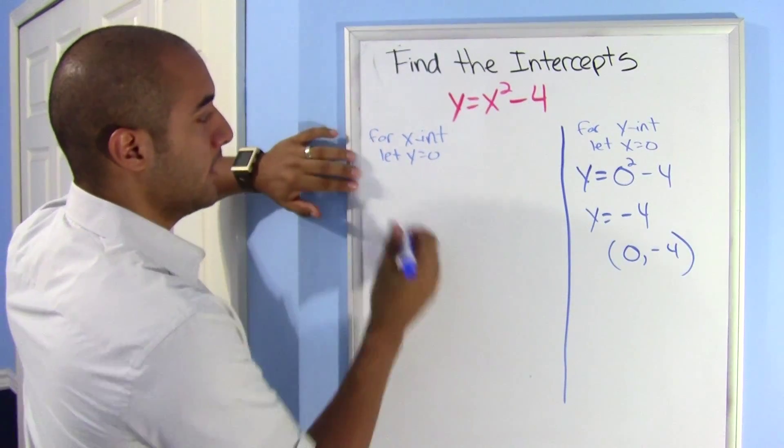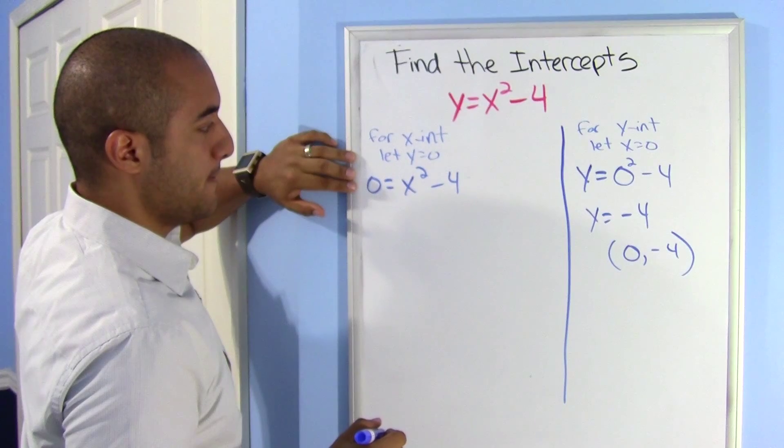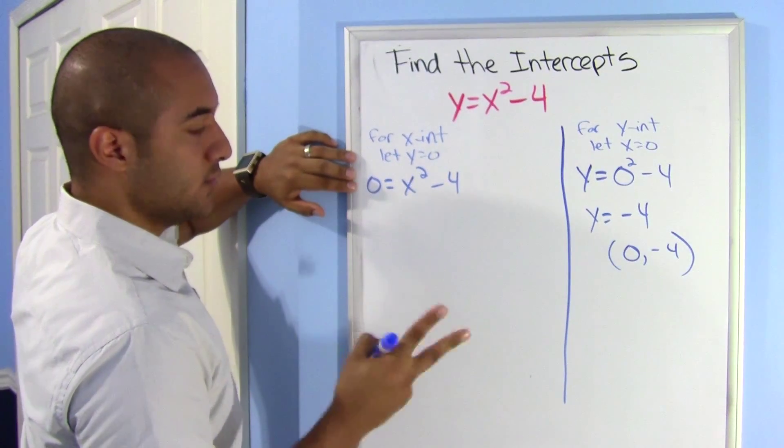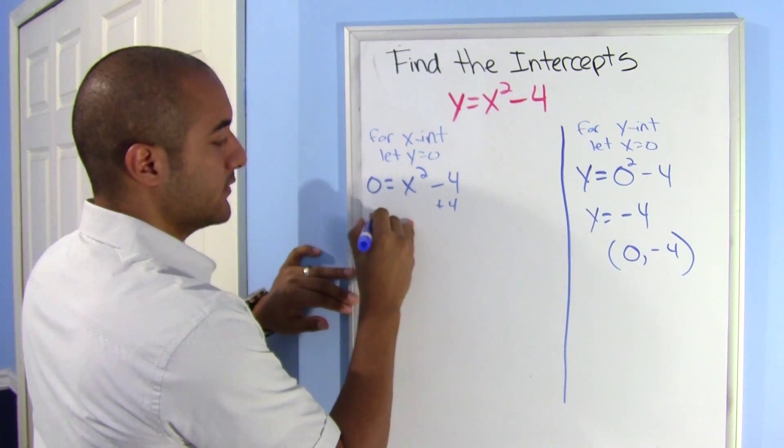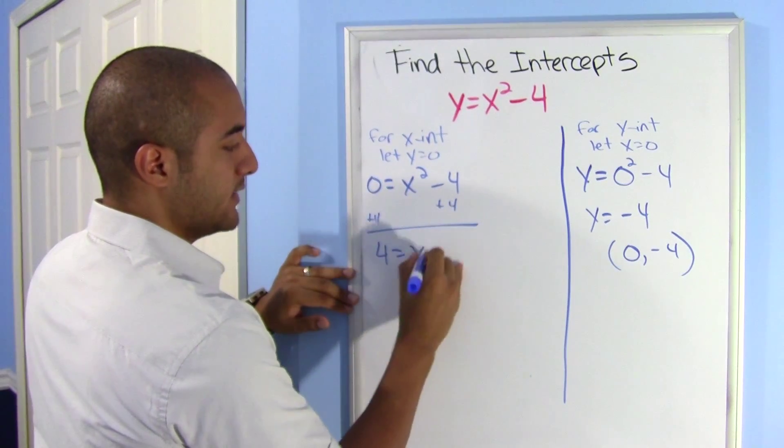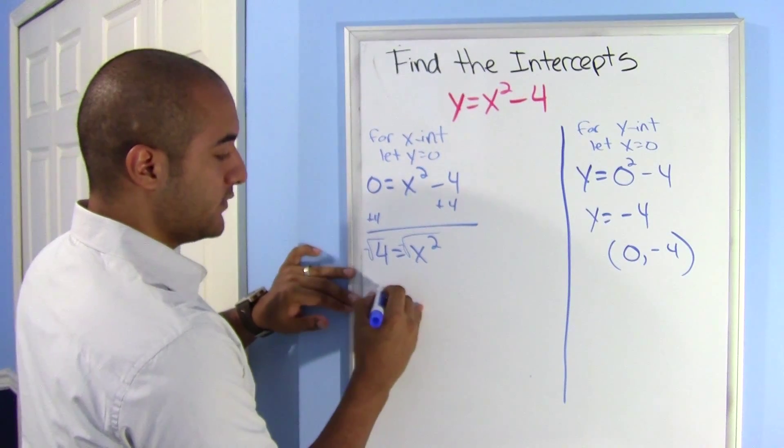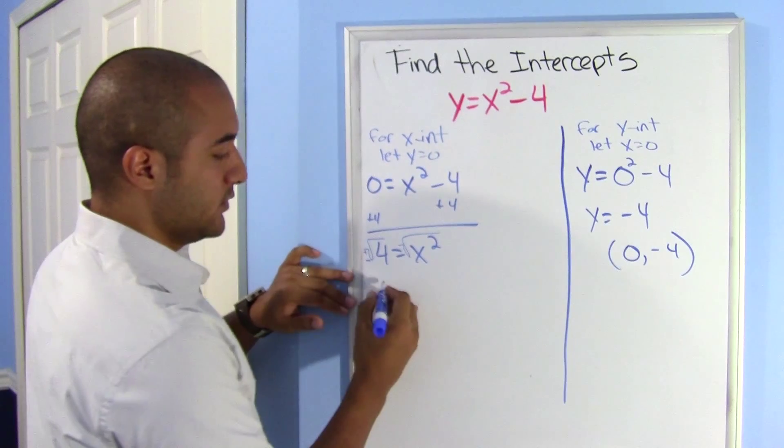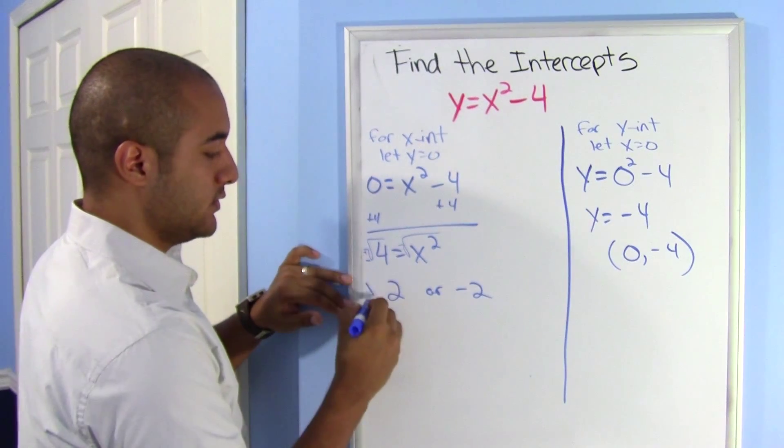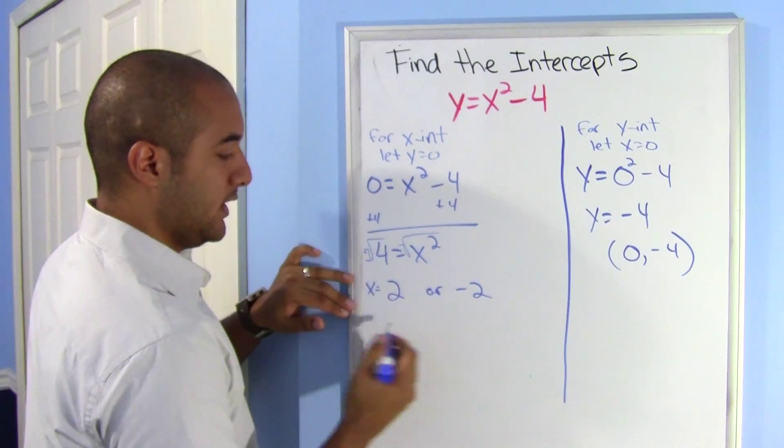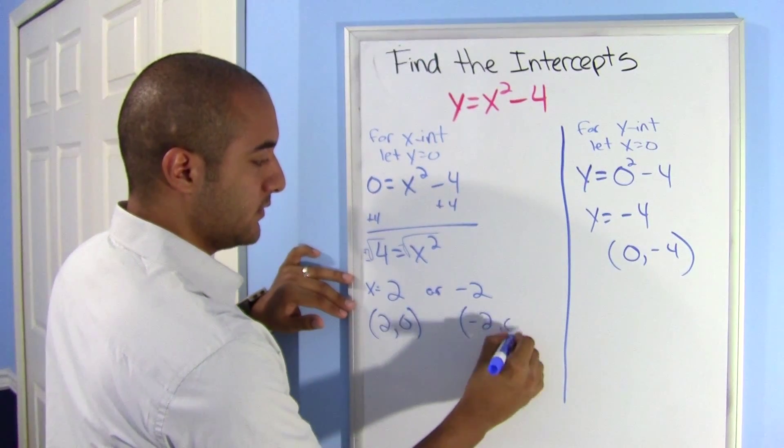So my y-intercept is 0, negative 4. Let's look at this one. Here my y is 0, so 0 equals x squared minus 4. There's two ways you can do this one. You can move this over, so plus 4 plus 4, 4 equals x squared. And when you actually take the square root here, you would have to remember that there's a positive and a negative root. So that could be either 2 or negative 2, so your x is either 2 or negative 2, and you get two answers here: 2, 0, and negative 2, 0.